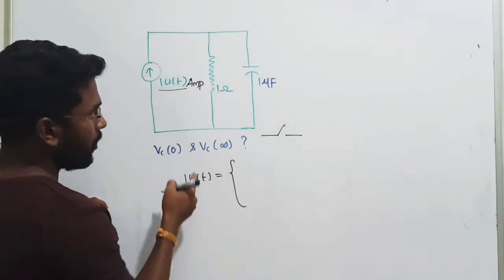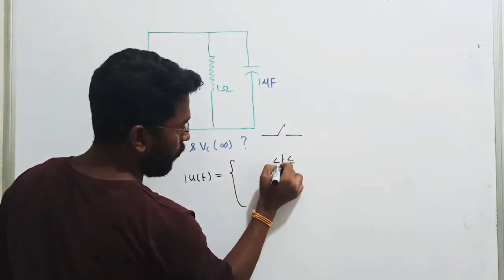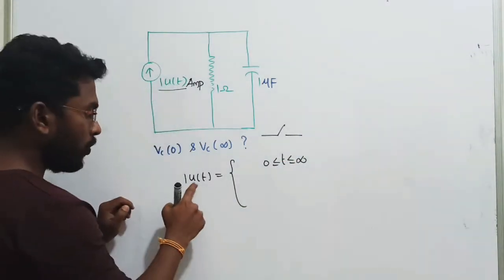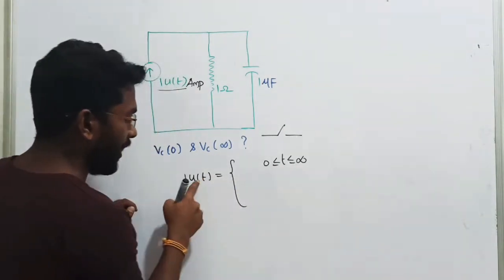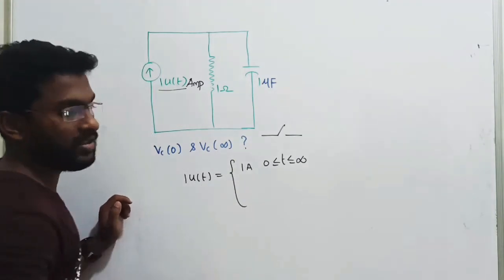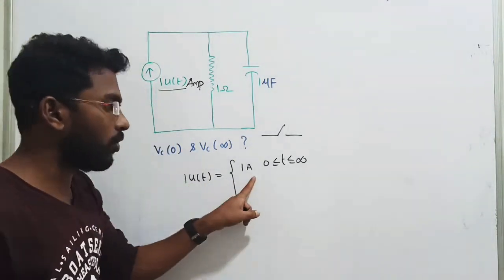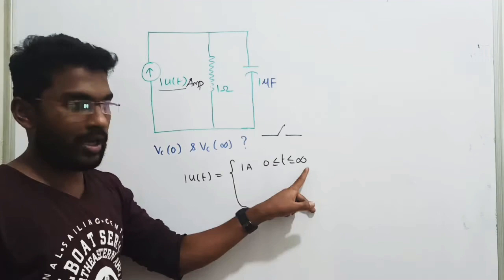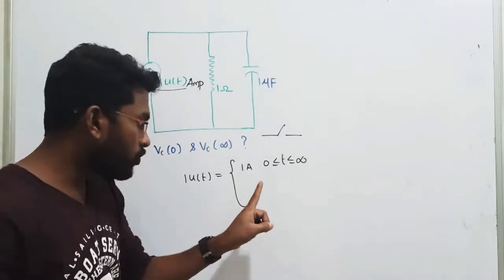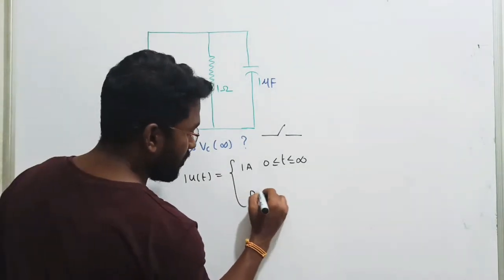In 1 into u(t), u(t) is the duration. u(t) will exist only from 0 to infinity. From 0 to infinity, the value of u(t) is 1. Now 1 into 1 becomes 1 ampere. So the magnitude of this current source is going to be 1 ampere from 0 to infinity, because from 0 to infinity the value of u(t) is also 1.